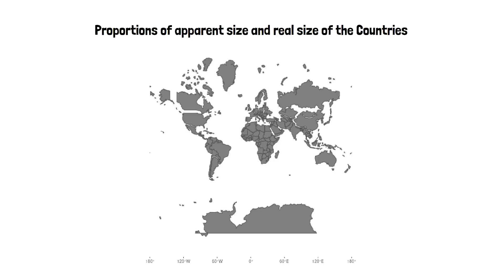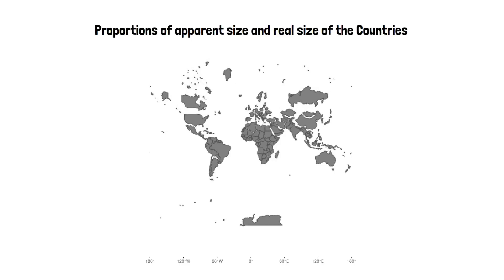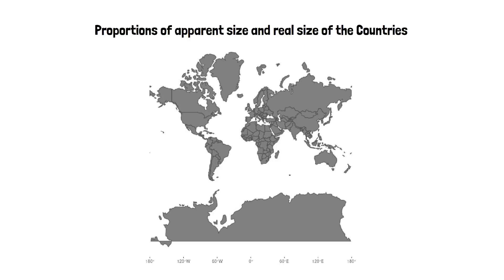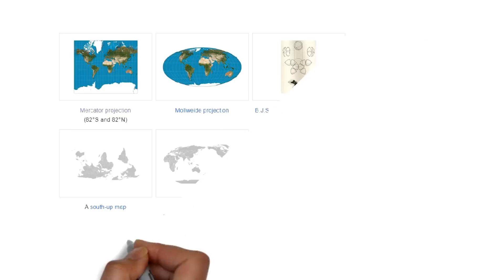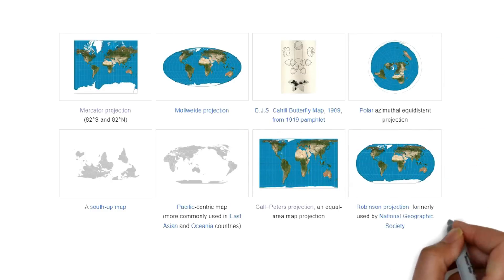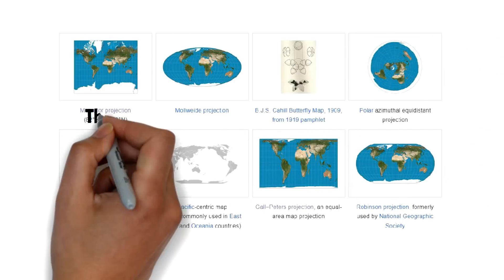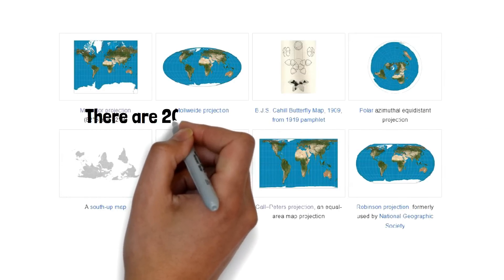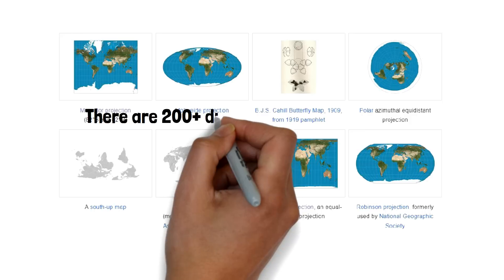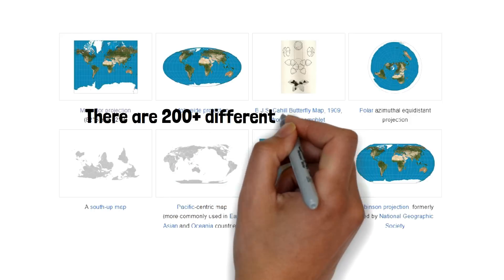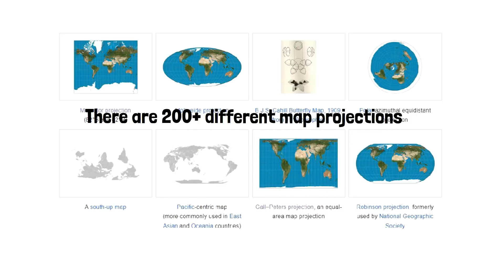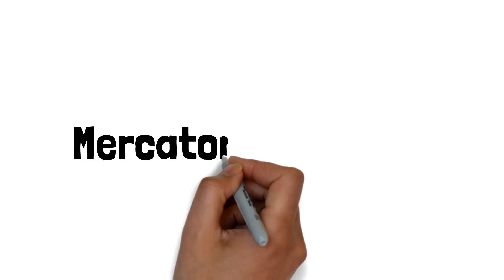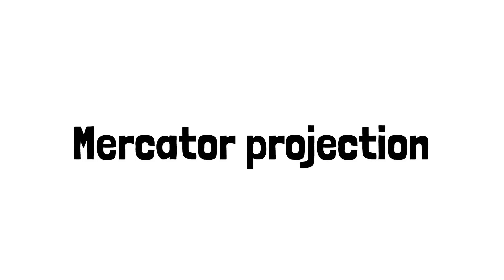When we look at a map of the world, we often take for granted that it accurately represents the shape and size of the earth's landmasses and oceans. But in reality, all maps are projections and each projection distorts the earth in different ways. There are a whole lot of map projections of the earth. The most widely used projection, used by Google Maps, Apple Maps, schools, colleges, etc., is the Mercator projection.